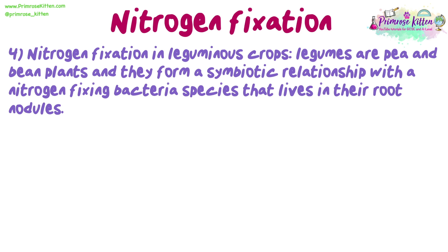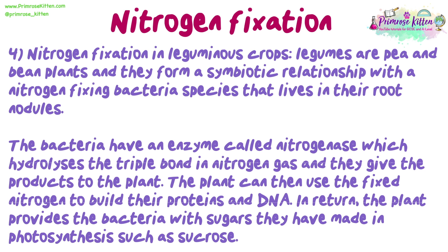Lastly, nitrogen fixation in leguminous crops. Legumes are pea and bean plants, and they form a symbiotic relationship with a nitrogen-fixing bacteria species that lives in their root nodules. The bacteria have an enzyme called nitrogenase, which hydrolyses the triple bond in nitrogen gas, and they give the products to the plant. The plant can then use the fixed nitrogen to build their proteins and DNA. In return, the plant provides the bacteria with sugars made in photosynthesis, such as sucrose.